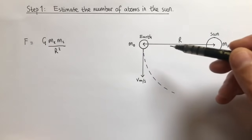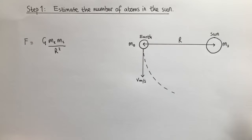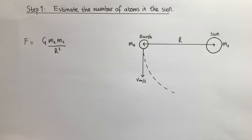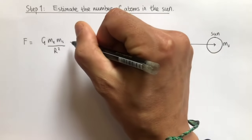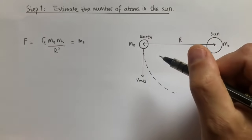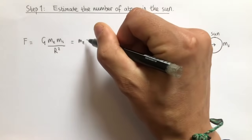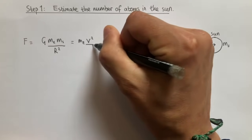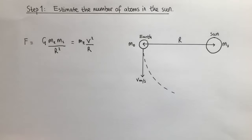Given that we're assuming the Earth is moving in a circle, the Earth is accelerating because the direction is constantly changing. Therefore the gravitational force is acting as the centripetal force causing the Earth to move in a circle. This tells us that the Earth, with its mass ME, is going to be accelerating with an acceleration equal to the velocity squared divided by the radius. Now that we have this expression, we can rearrange for MS.